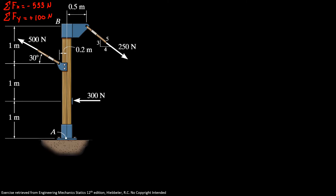Now I'm gonna find the moments about point B. So let's look at force F1. Our third step is the sum of moments about B. Remember that counterclockwise is positive. My force F1x doesn't generate a moment because it's aligned with point B, but my force F1y does generate a moment.